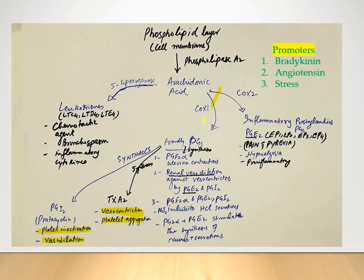If we block the cyclooxygenase pathway, the equilibrium will be shifted toward the 5-lipoxygenase pathway, and arachidonic acid will be converted into leukotrienes. These leukotrienes are powerful chemotactic agents and they produce bronchospasm as well as release of inflammatory cytokines. Therefore, use of NSAIDs — drugs that inhibit cyclooxygenase — will shift the equilibrium to the left, and managing pain in patients with a history of asthma can be dangerous.